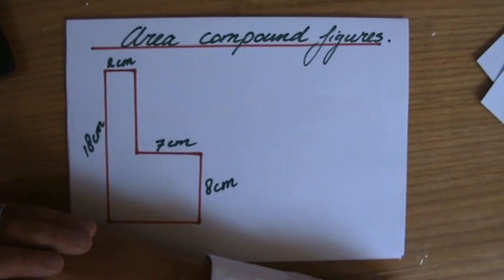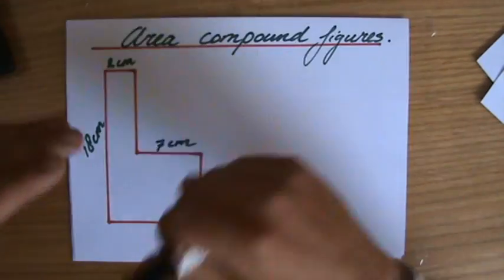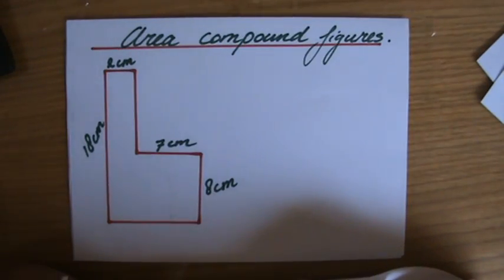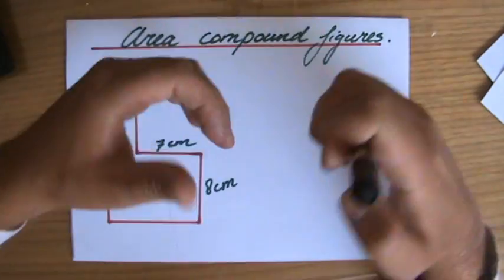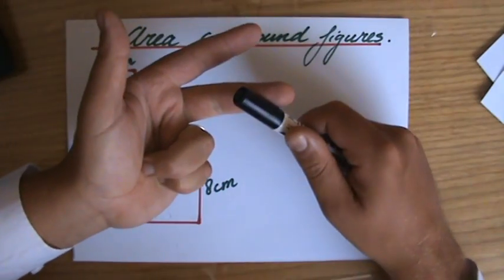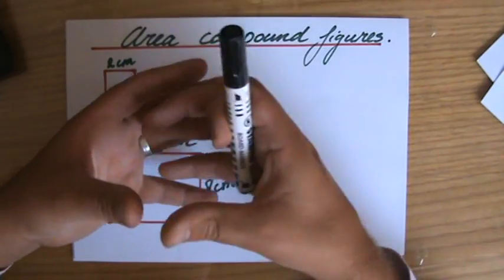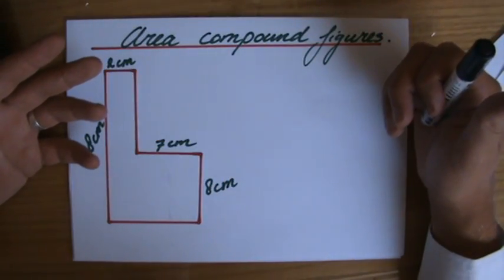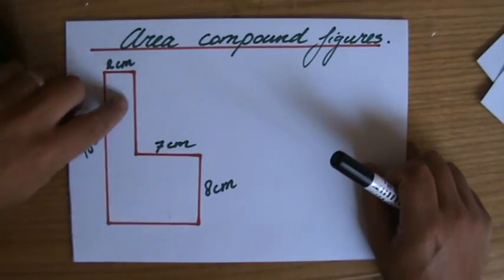Welcome back. We are looking at the areas of compound figures, and what do we mean with that? Well, you have learned the formulas to find the area of a trapezium, a square, a triangle, parallelograms, rectangles. So you know the formulas to find the areas of those polygons.